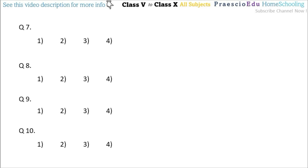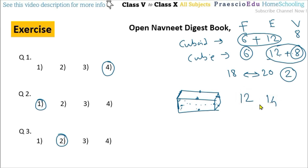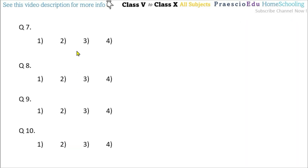Question number 7: By how much are the edges of the cube more or less than the sum of its vertices and faces? Faces = 6, vertices = 8, so 8 plus 6 = 14. Edges = 12. So 12 is less than 14 by 2 — less by 2 — so option number 3 is the correct one for question number 7.